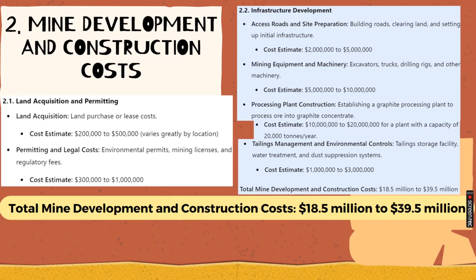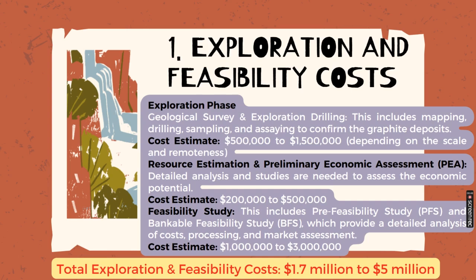Processing plant construction costs are estimated at 1,000,000 to 2,000,000 US dollars for a capacity of 20,000 tons per year — and you will need to multiply that cost over the years as well. For tailings management and environmental controls — including tailings storage facility, water treatment, and dust suppression — the estimate is 1,000,000 to 3,000,000 US dollars. The overall total mine development and construction cost comes to approximately 18.5 million to 39.5 million US dollars.